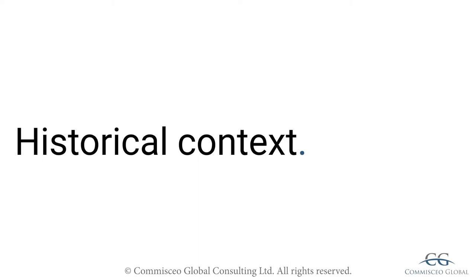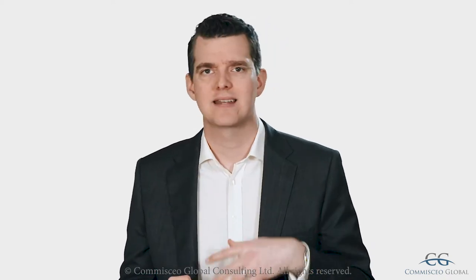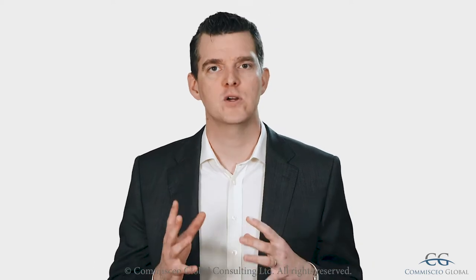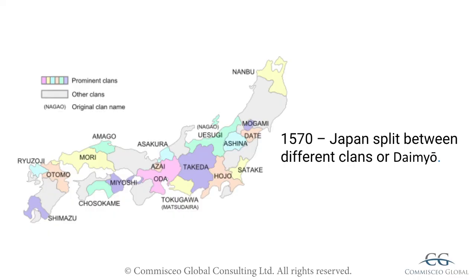Japan has a very long, rich and complex history. For the purposes of this training, learning every detail about Japanese history is not essential. However, what is essential is understanding some basics — it's these basics that will help us get under the skin of the Japanese and start to appreciate how they may see the world and how their values have been shaped. Let's take ourselves back to the beginnings of Japan. At this time, food was the primary commodity and in Japan food was rice. Whoever controlled rice production essentially held power, leading to the start of small independent kingdoms across Japan.